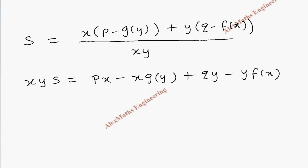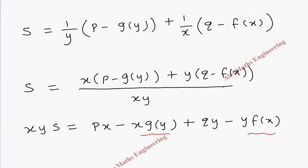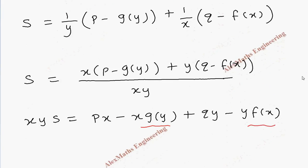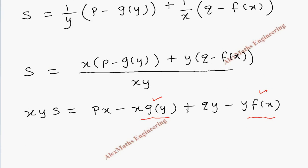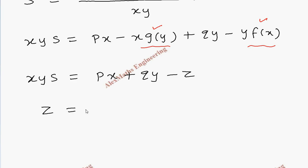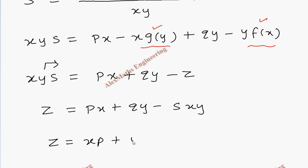Now taking these two terms — x into g of y and y into f of x — this is nothing but minus z, because from our original question z equals y times f of x plus x times g of y. So y times f of x and x times g of y are both minus, and are taken as minus z. So rearranging, xy times s equals px plus qy minus z. Taking z to the other side, z equals px plus qy minus xy times s. So the final answer is z equals x times p plus y times q minus xy times s. This is our required partial differential equation after eliminating the arbitrary functions.